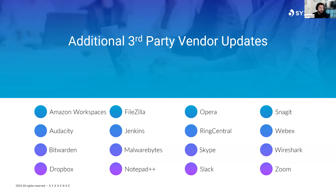Some additional products with no particular security advisories to highlight but which have seen updates since the start of the year include Amazon Workspaces, Audacity, Bitwarden, Dropbox, FileZilla, Jenkins, Malwarebytes, Notepad++, Opera, RingCentral, Skype, Slack, Snagit, WebEx, Wireshark, and Zoom. My monthly reminder to all administrators: please include third-party patching in your patch deployment process. Around 20% of all vulnerabilities are in the operating system, while around 75% to 80% are in the applications you add on top. If you're only prioritizing operating system patches, you're not handling a large chunk of what could be considered an exploit. Any and all installed applications can be considered a potential vulnerability.